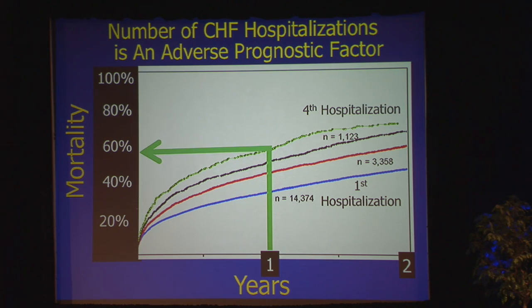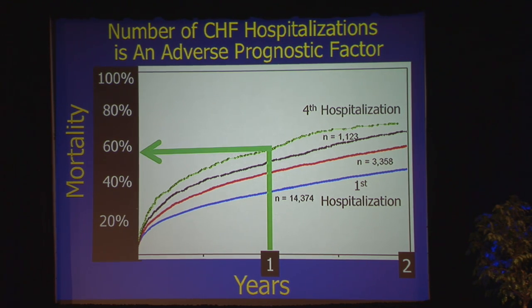With four hospitalizations, you're already up to about a 60% mortality. In this field now, most of us are saying it really takes two hospitalizations in one year — so if you're on about this red line here, at about a 40% one-year mortality, that's the trigger to consider a referral to an advanced heart failure center.